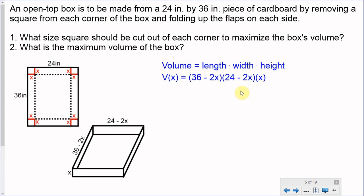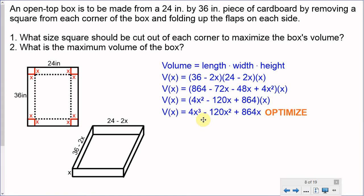Now, we're going to perform a little bit of algebra. I'm going to multiply these two binomials together, and that will give me a result of 864 - 72x - 48x + 4x². I now see that I have like terms here in the middle. So, I'm going to put those like terms together and put this into standard form. Now I have 4x² - 120x + 864, and that x is still on the end. I will now distribute that x into the set of parentheses, giving me my volume function, which is 4x³ - 120x² + 864x.